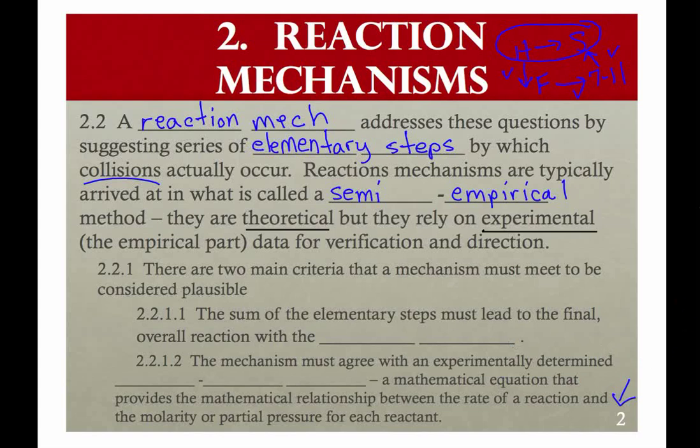Now as we evaluate whether a mechanism is plausible, note that we're not saying that this is the mechanism. All we're saying is, man, this looks like I could study it further. It looks worthy of more time on our part. And the first criterion is, the elementary steps must add up to the correct overall stoichiometry. So we would have to get whatever the mole ratios were in the original overall stoichiometry.